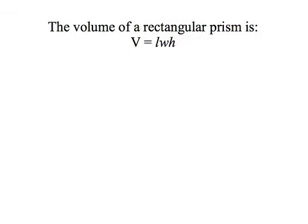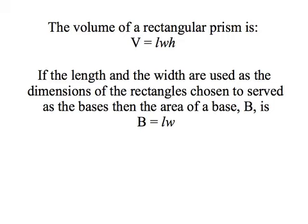The volume of a rectangular prism equals the length times the width times the height. If the length and the width are used as the dimensions of the rectangles chosen to serve as the bases, then the area of the base, capital B, equals the length times the width. The word here is base.